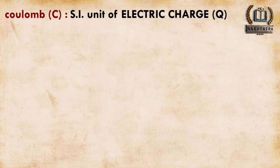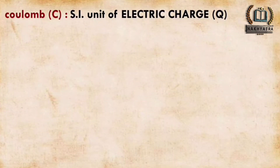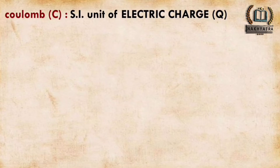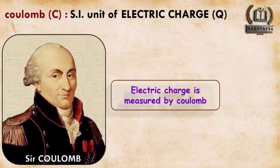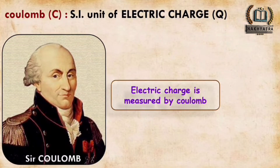What is the SI unit of electric charge Q? Coulomb is the SI unit of electric charge — electric charge is measured in Coulombs and it is denoted by C. The Coulomb is named after the scientist Charles-Augustin de Coulomb.